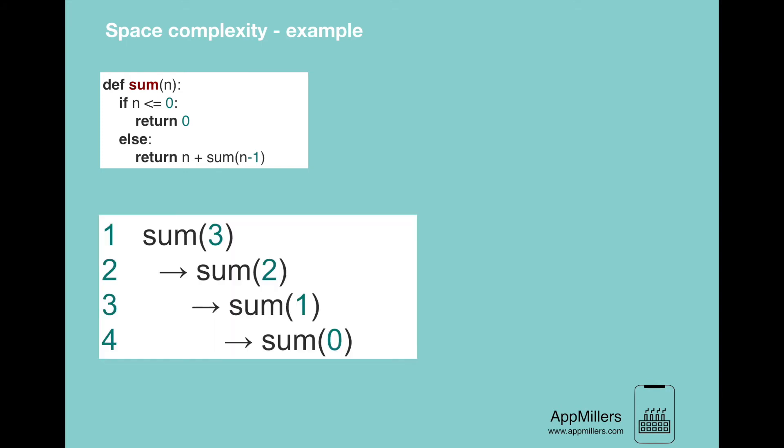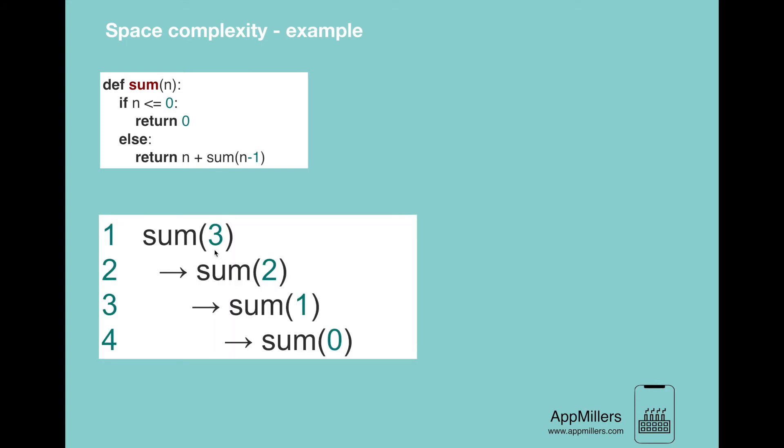For example, if we call this function for n equal to 3, we see that in each call it adds a level to the stack, meaning it takes memory in the stack. As the input size grows, the memory that we will need will grow. So for this block of code, space complexity is O(n).